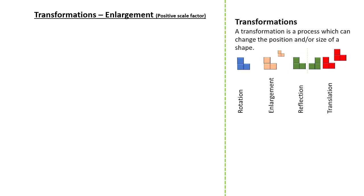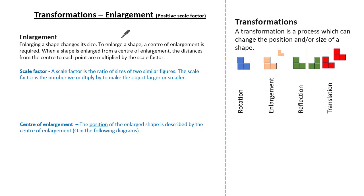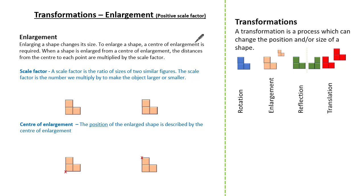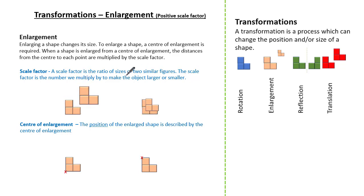Let's look at some key words starting with enlargement. Enlarging a shape changes its size. To enlarge a shape, a center of enlargement is required. When a shape is enlarged from a center of enlargement, the distances from the center to each point are multiplied by the scale factor. A scale factor is the ratio of sizes of two similar figures — it's the number we multiply by to make an object larger or smaller.